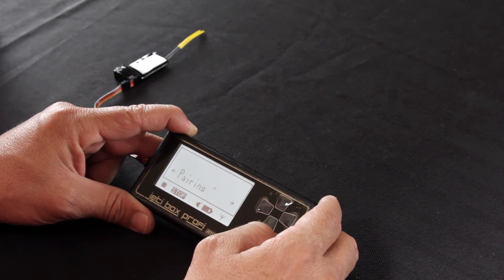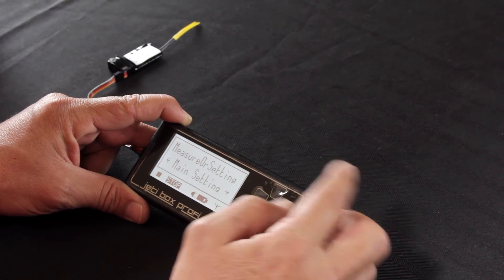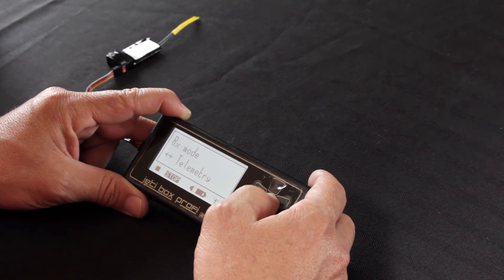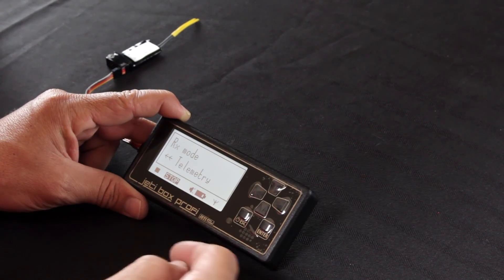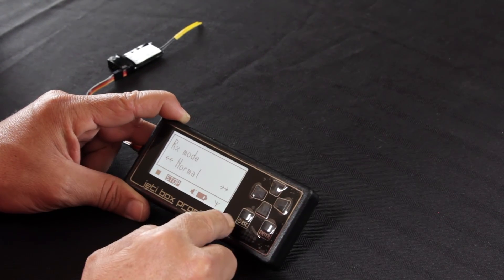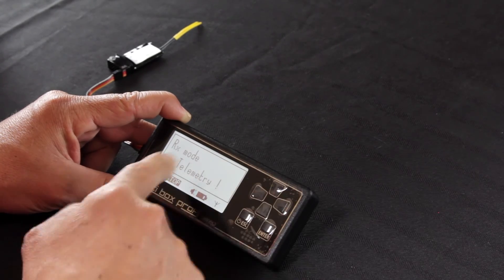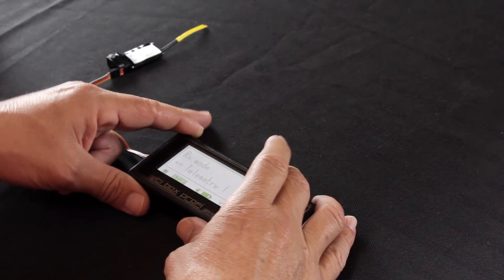You're going to click right one time. You're going to click down to measure. You're going to click right to main setting and scroll down to RX mode. Currently it's in telemetry. When you receive the receiver, it'll be in normal mode. You hold the right arrow until it changes to telemetry and you're finished.